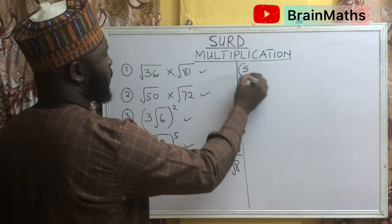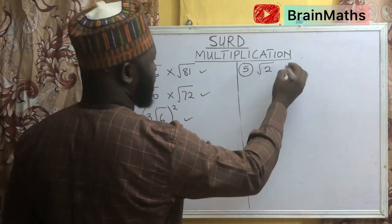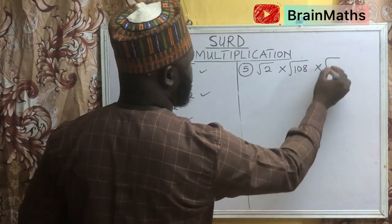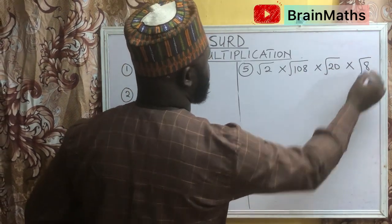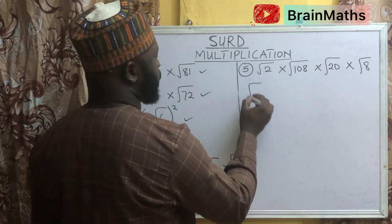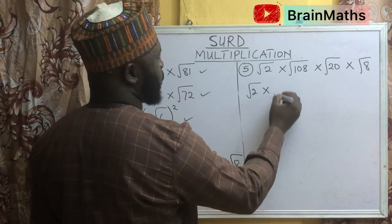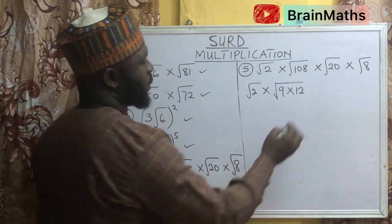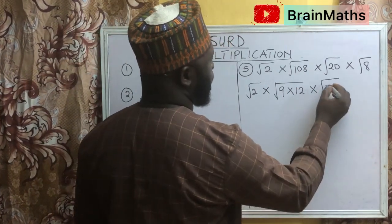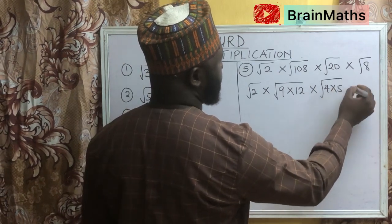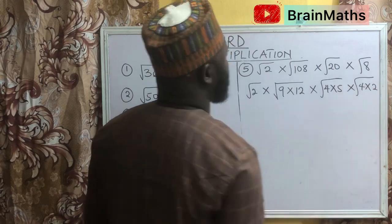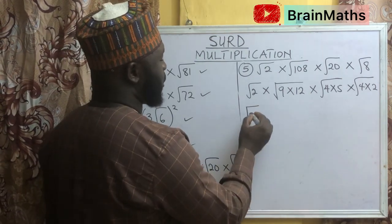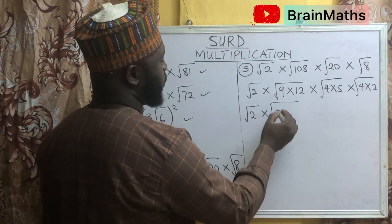Question number 5 says: root 2 times root 108 times root 20 times root 8. So this is root 2 times — we break this down into root 9 times 12. Root 12 times, root 12 times, this one into 4 times 5, and this into 4 times 2.